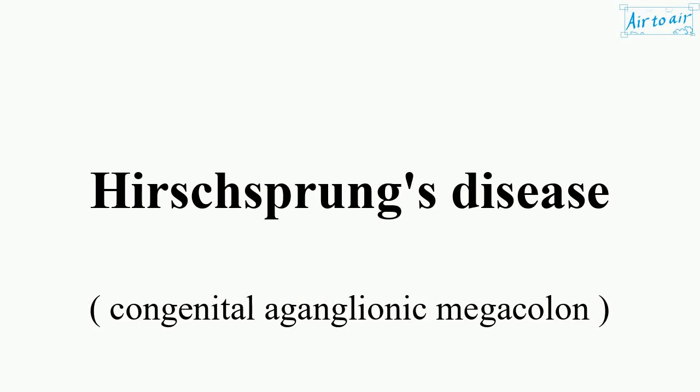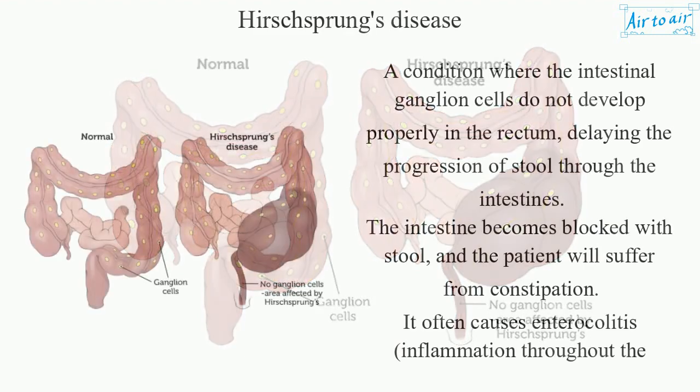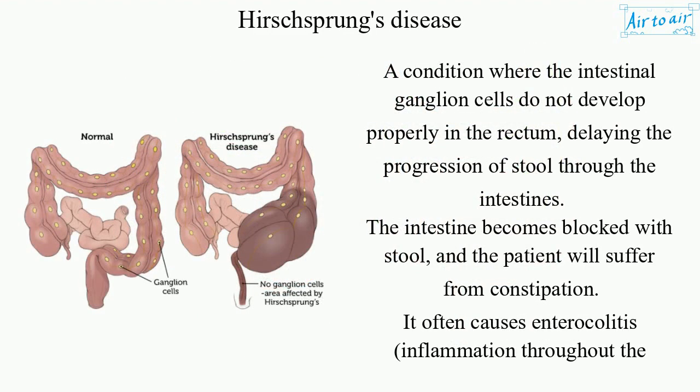Hirschsprung's Disease is a condition where the intestinal ganglion cells do not develop properly in the rectum, delaying the progression of stool through the intestines.